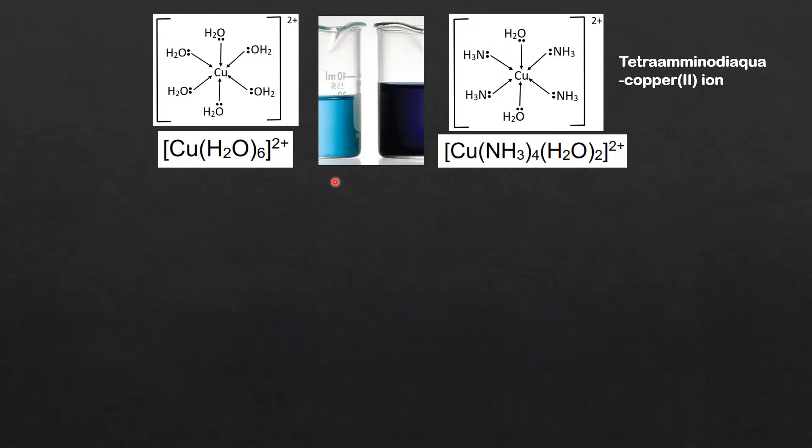Next we look at the effect of changing the ligand on the color of the complex ion. On the left here we have the hexa-aqua-copper-2 ion which forms this light blue color in solution. On the right we have the tetra-amino-diaqua-copper-2 ion which forms this dark blue or violet color in solution.